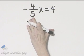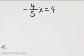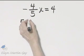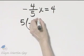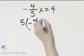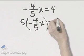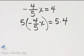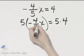I'm going to multiply both sides by the LCD here of 5. So I'll multiply the left side by 5, and I'll multiply the right side by 5. Now notice what happens.